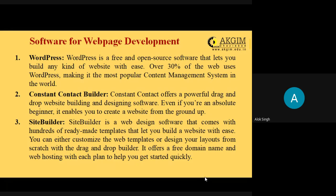The first company is WordPress. WordPress is a free and open source software that lets you build any kind of website with ease. Over 30 percent of the web uses WordPress, making it the most popular content management system in the world. It provides customized layouts and drag-and-drop menus, and supports editing and layout changes over time.